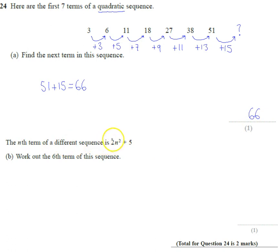Bottom it says the nth term of a different sequence is 2n squared plus 5. Work out the sixth term. Well, that's easy. So we just have to replace n with 6. So we're going to do 2 times 6 squared, add on 5.